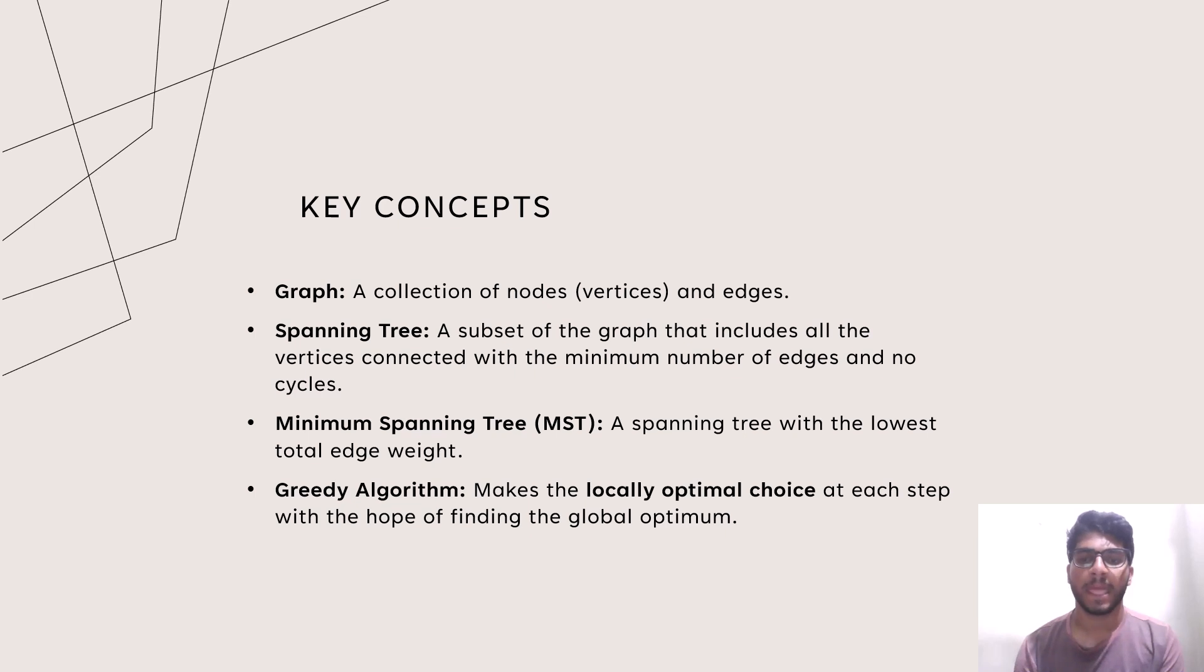Minimum Spanning Tree: a spanning tree with the lowest total edge weight. Greedy algorithm: Makes the locally optimal choice at each step with the hope of finding the global optimum.